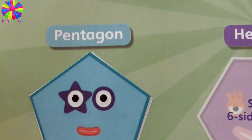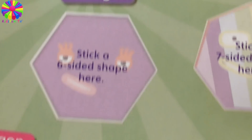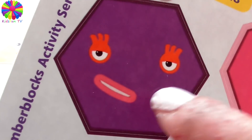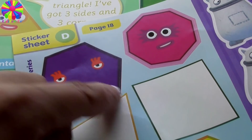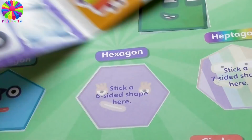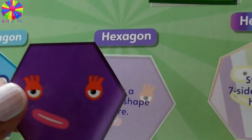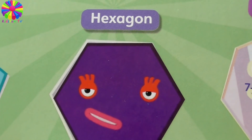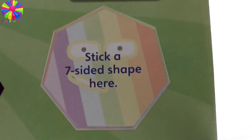Numberblock Five has five sides and it's called a pentagon. The next one is a six-sided shape. Is it this one? Is it this one? One, two, three, four, five, six — yes! It's Numberblock Six. Which shape is Numberblock Six? Numberblock Six is a hexagon — a hexagon has six sides.